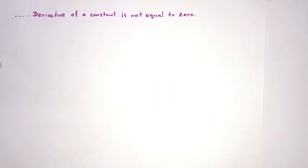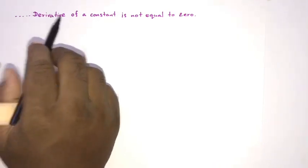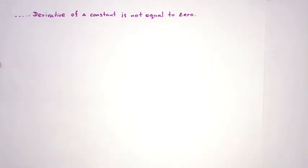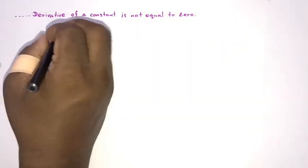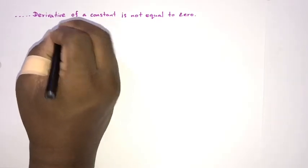Welcome to the Mathematics channel. Here we have: the derivative of a constant is not equal to zero. I am beginning with the derivative — d by dx, also represented as capital D.